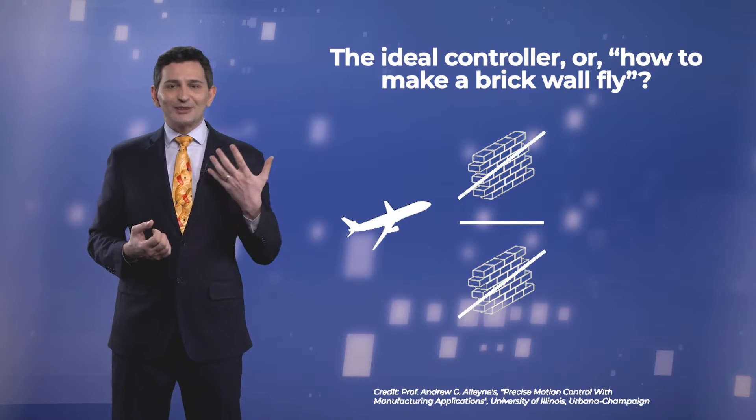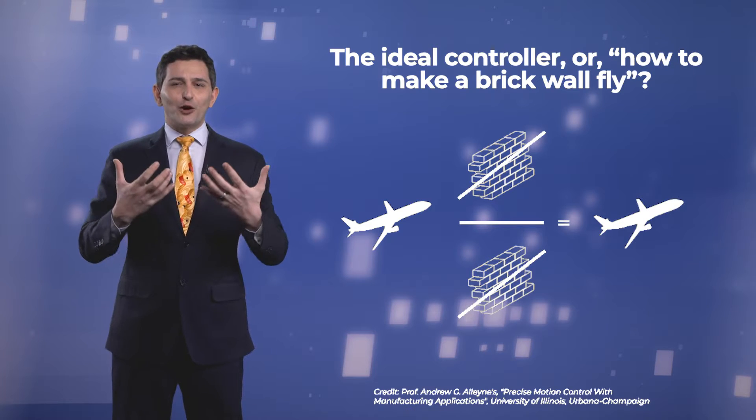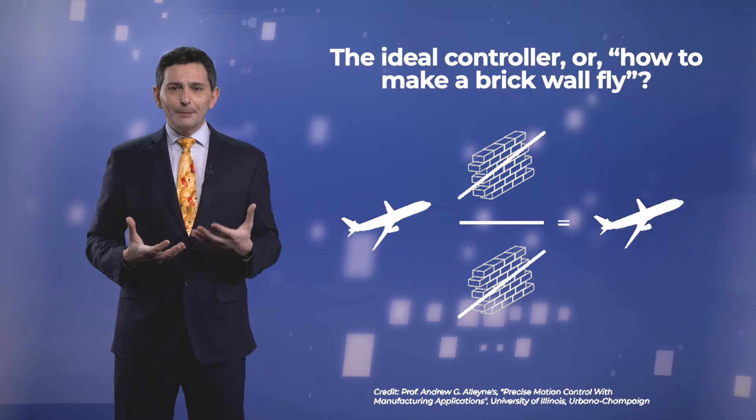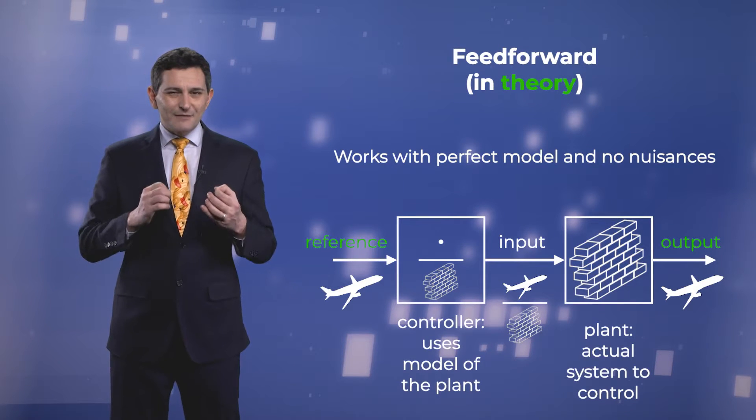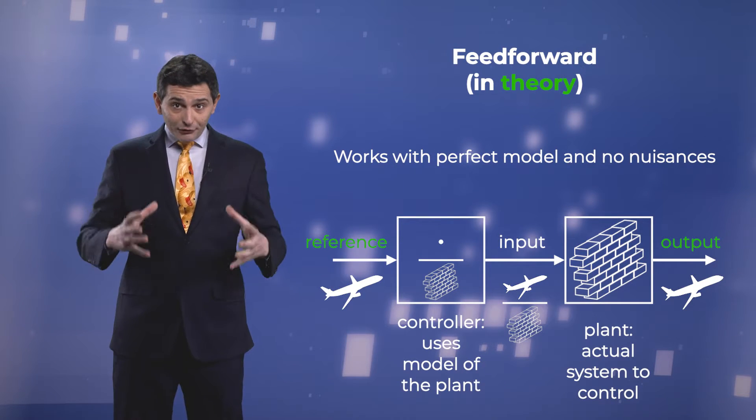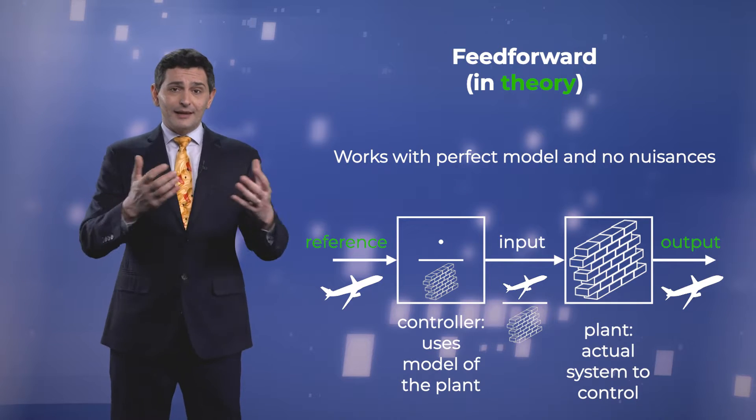This joke captures the essence of a feed-forward control, an open-loop control strategy based on plant inversion. When our model of the system is very good, we can theoretically change wall bricks into airplanes.